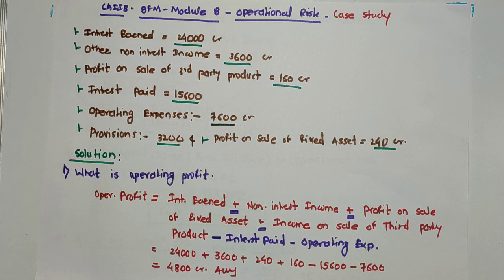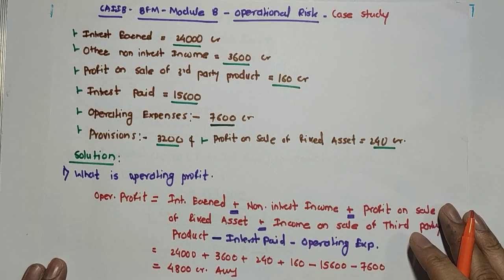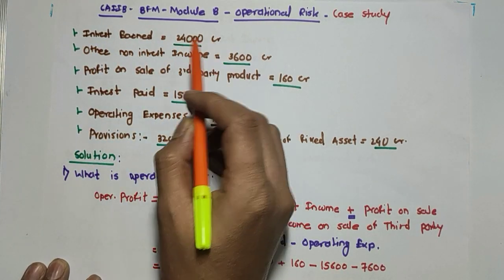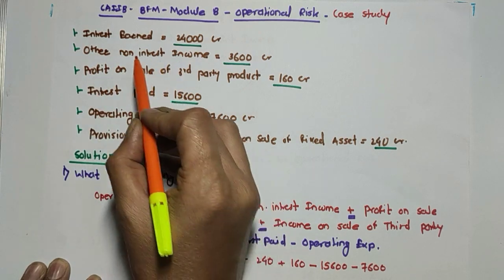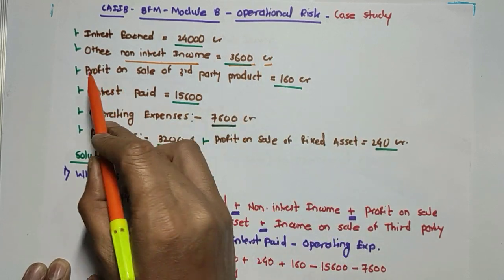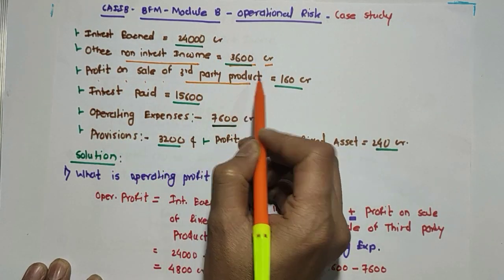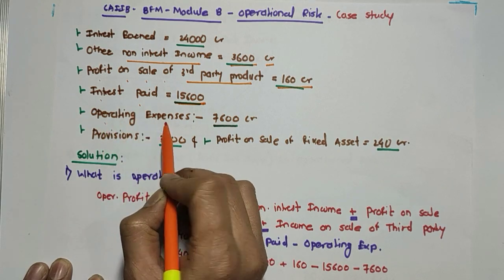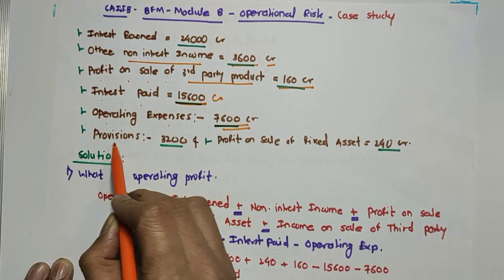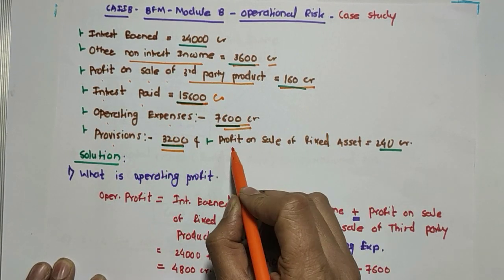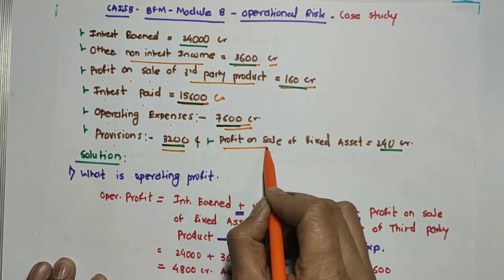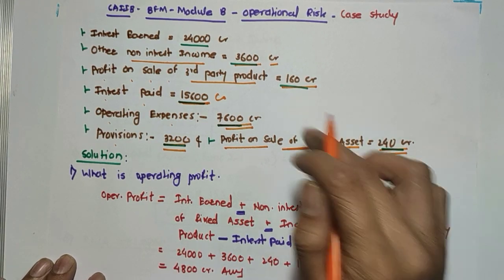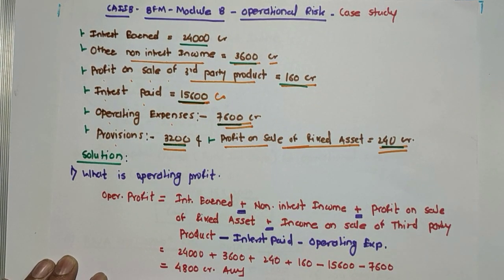Hello friends, in this video we will study one important case study of operational risk. The given data is: interest earned is 24,000 crore, other non-interest income is 3,600 CR, profit on sale of third party product is 160 CR, interest paid is 15,600 CR, operating expenses are 7,600 CR, provisions is 3,200, and profit on sale of fixed assets is 240 CR. Based on this information, they are asking four to five questions.